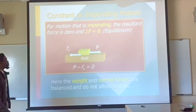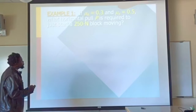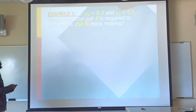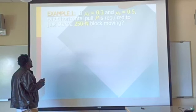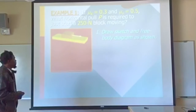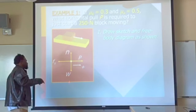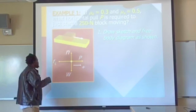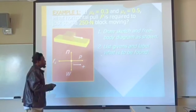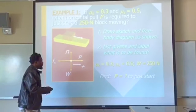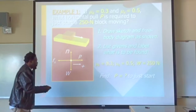Let's consider an example. If Mu-K equals 0.3 and Mu-S equals 0.5, what horizontal pulling force P is required to just start a 250-Newton block moving? The first thing we want to do is draw a free-body diagram. We draw the normal force from the surface pushing on the block, the weight of the block acting downward due to gravity, and because of the pulling force, there is a static friction force. We then list and label what is to be found. In this case, we want to find P, and we know our coefficient of static friction and the weight of the block.